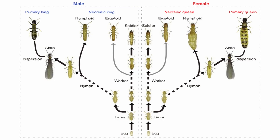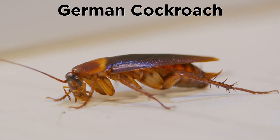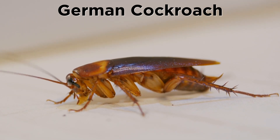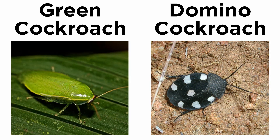Most termites have a worker and soldier caste system consisting primarily of sterile individuals, which are morphologically and behaviorally distinct, as well as reproductively mature individuals called a king and queen, which form a lifelong monogamous pair. The most common species of cockroach is probably the German cockroach due to its widespread occurrence alongside humans, though colorful species like the green eusocial cockroach and the domino cockroach are more common in warmer areas.